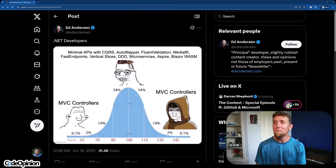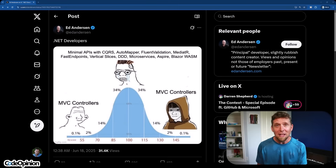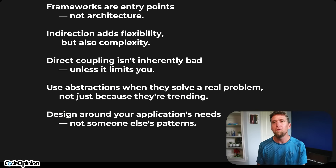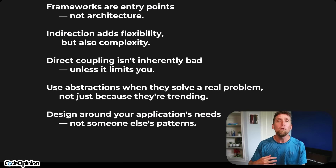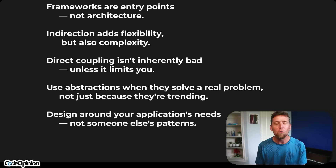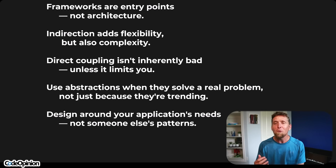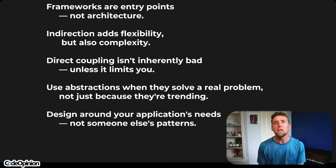Controllers aren't the problem. Minimal APIs with CQRS, automapper, mediator, fast endpoints, vertical slices, DDD — none of that's the problem. The problem is not understanding the tooling you're using in the given context and whether it actually has value. Frameworks are entry points — they're not architecture. Your architecture is composed of many different architectural styles. Indirection adds flexibility but also adds complexity. Direct coupling isn't inherently bad. You don't need an abstraction for everything unless it's limiting you. Use abstractions when they actually solve real problems, not just because everyone thinks you have to abstract everything. Design around your application's needs, not somebody else's patterns.